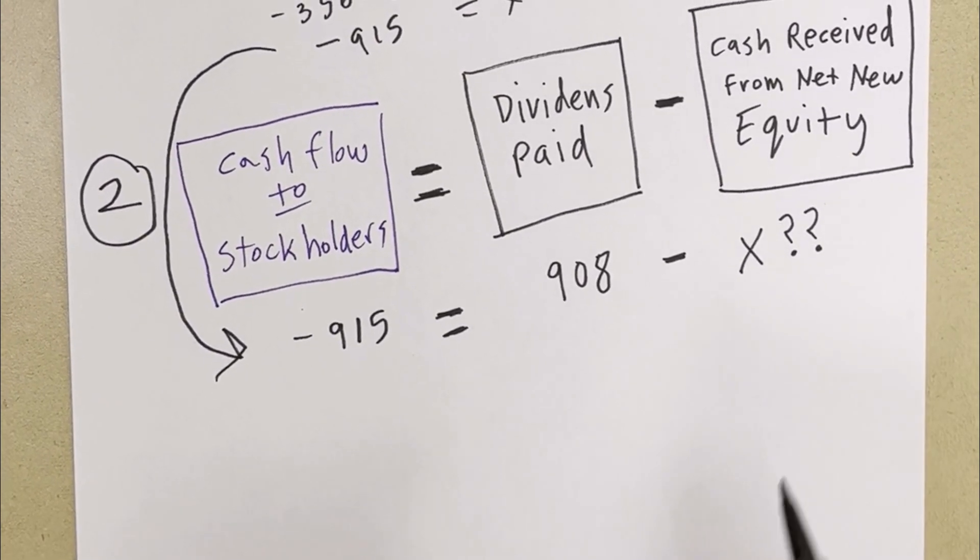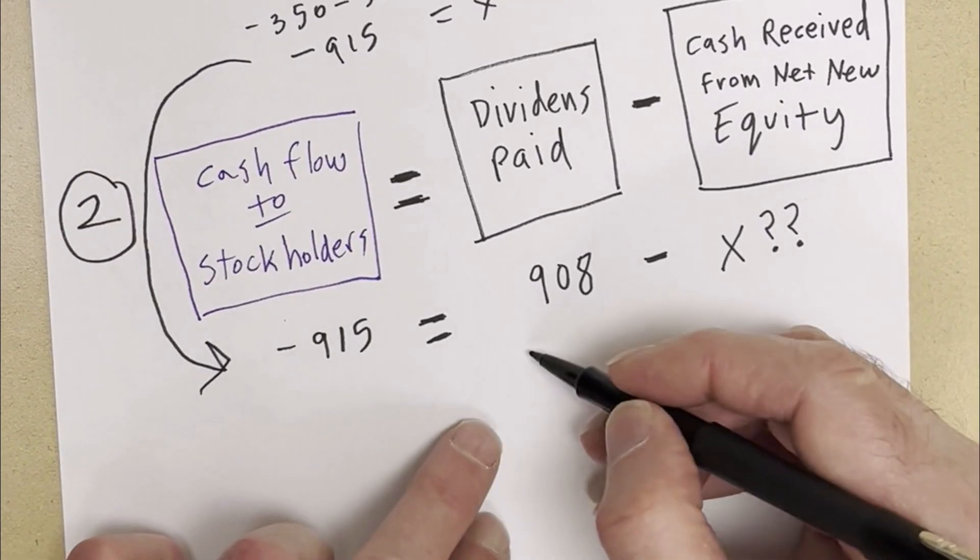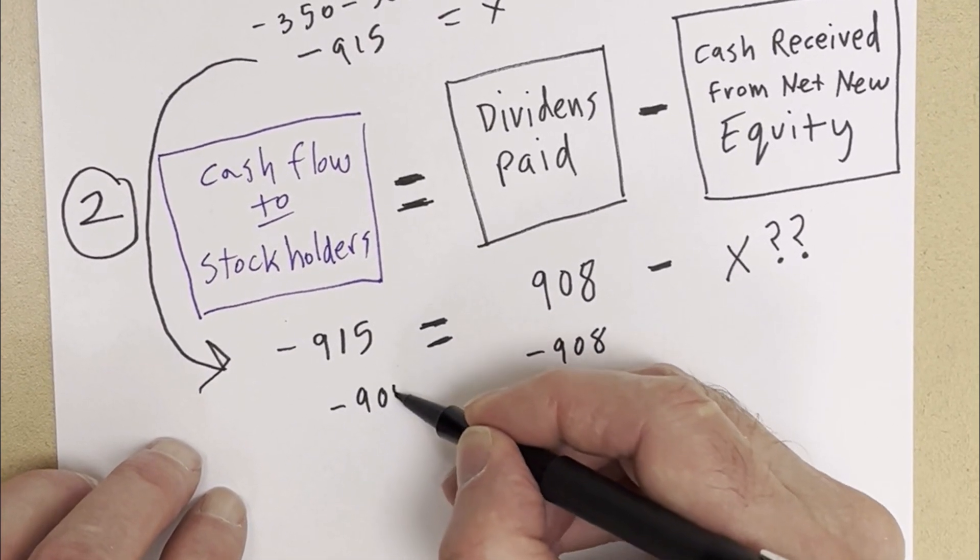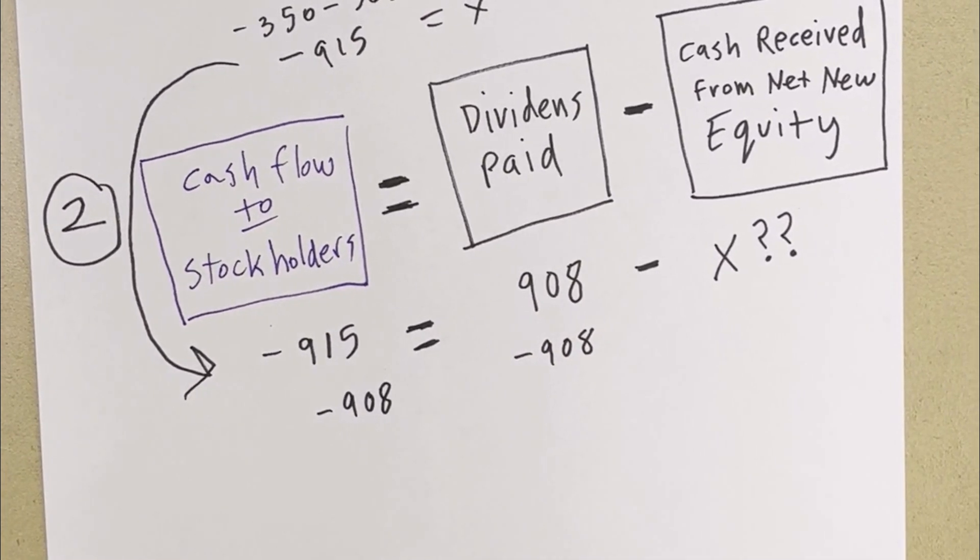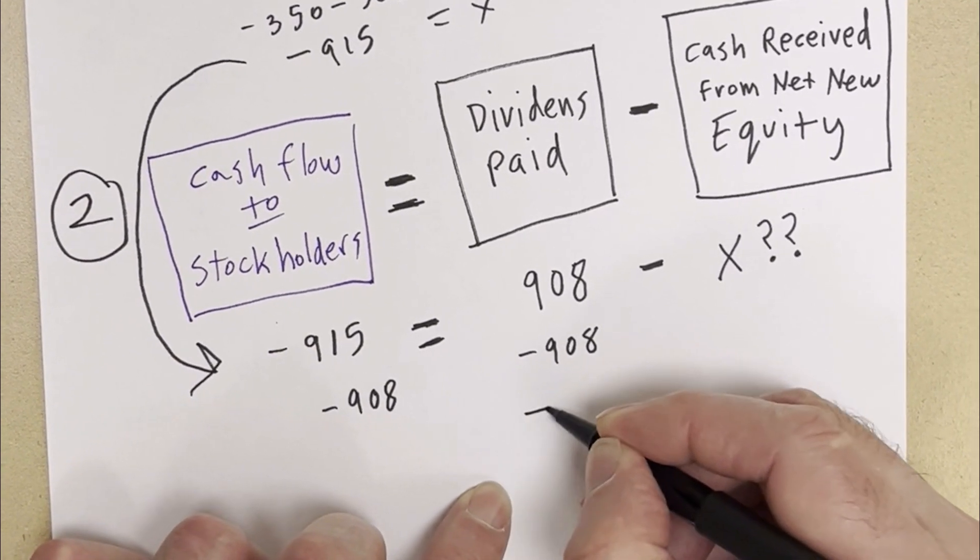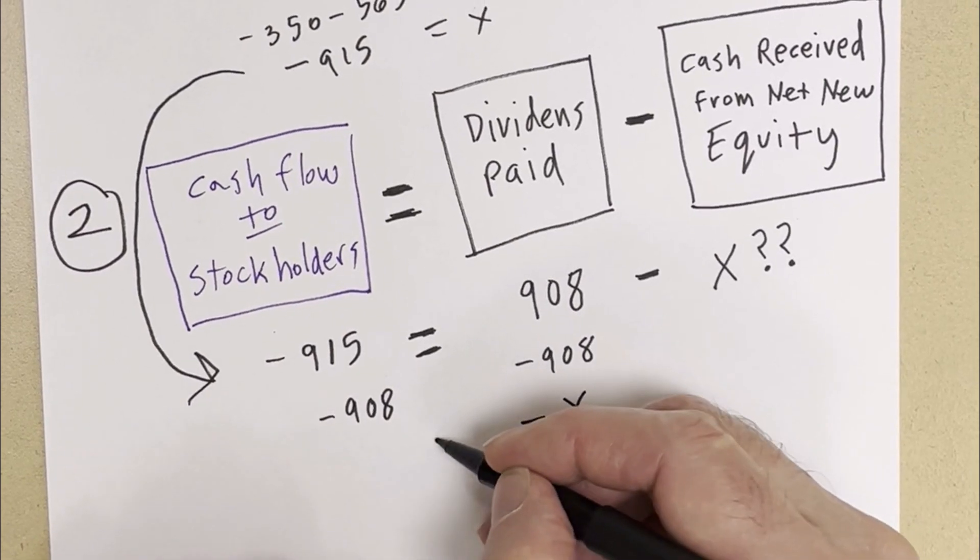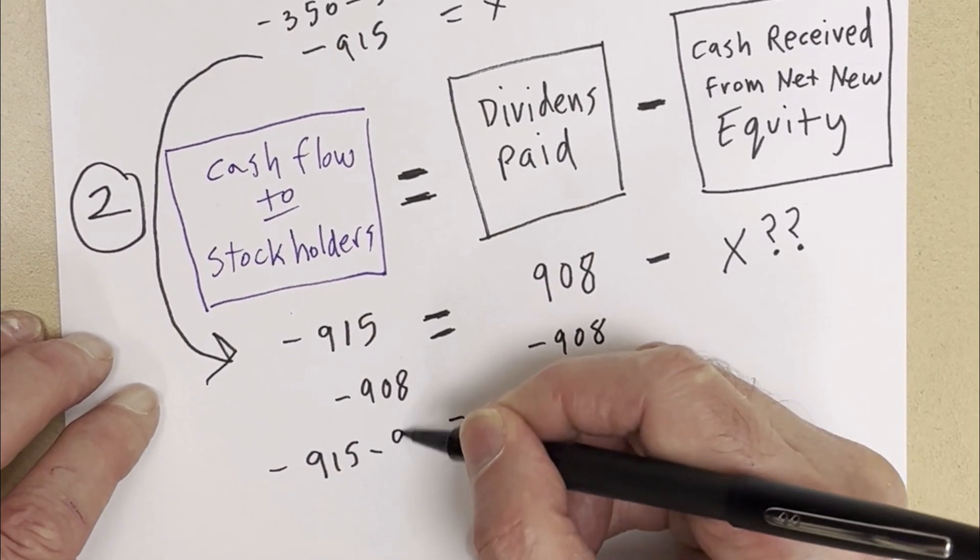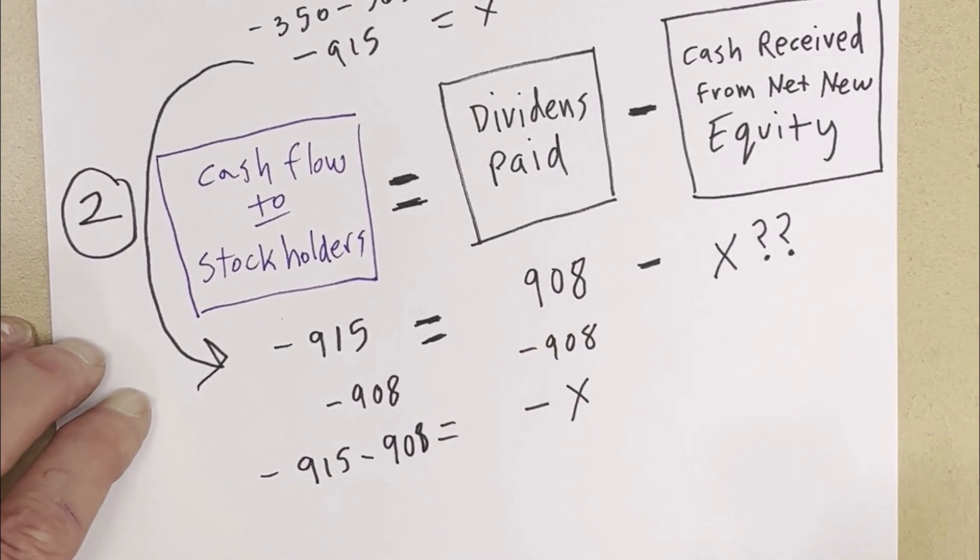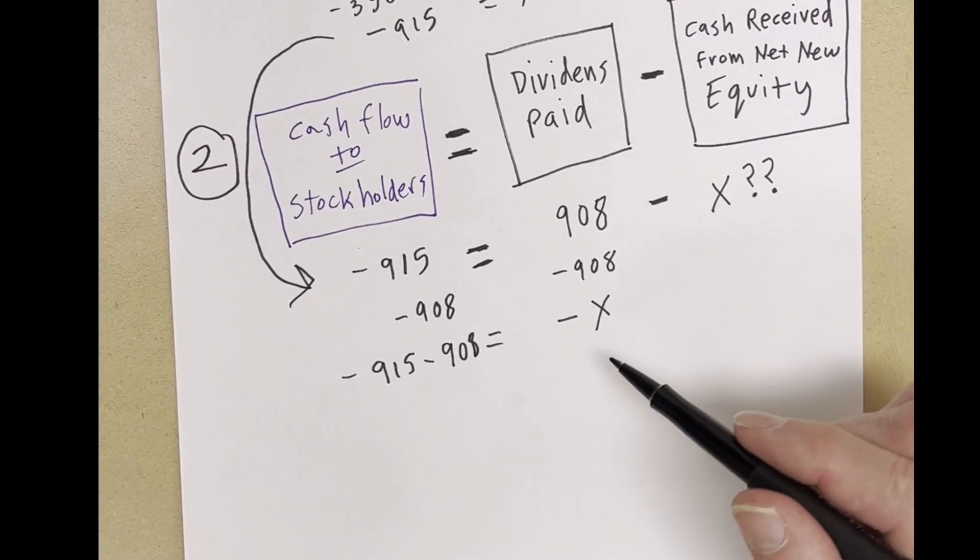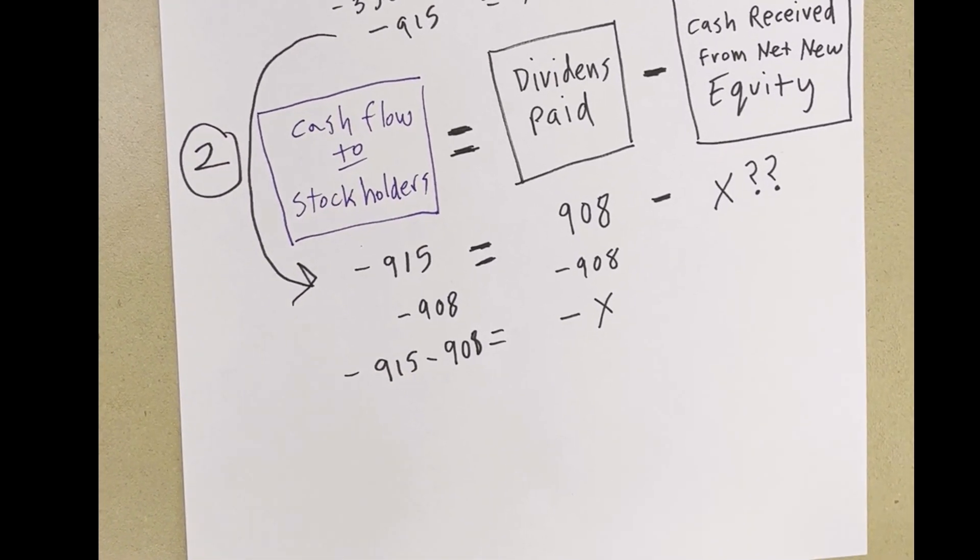Now, let's do our algebra. I need to isolate x, so I'm going to go minus 908, minus 908. Remember, we can do anything we want as long as it's to both sides. That leaves minus x equals minus 915 minus 908. Now, you are not done. We need to get this x not as a negative, but as a positive.